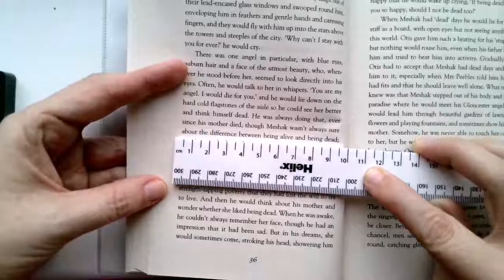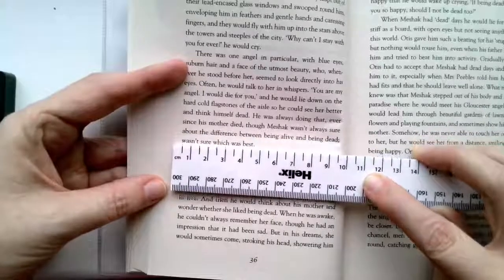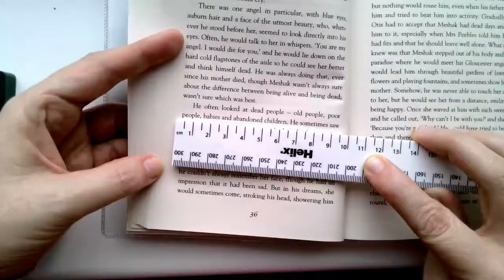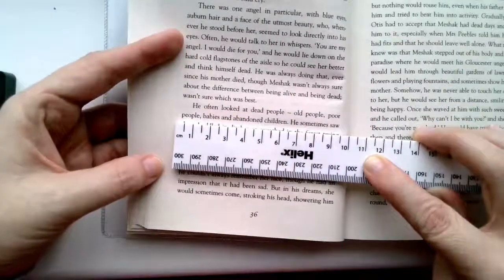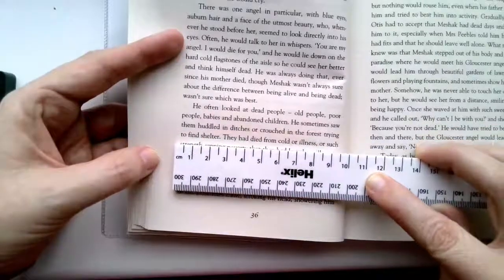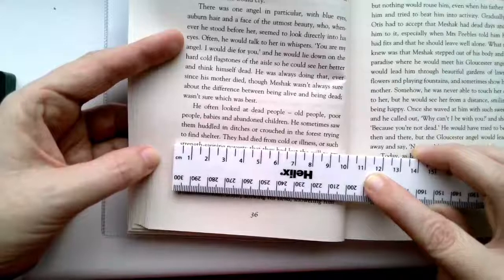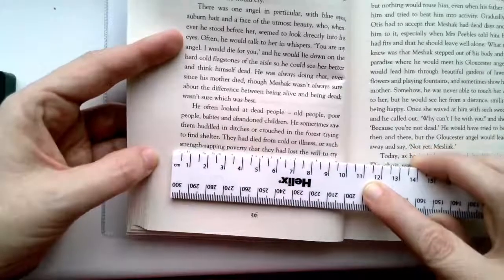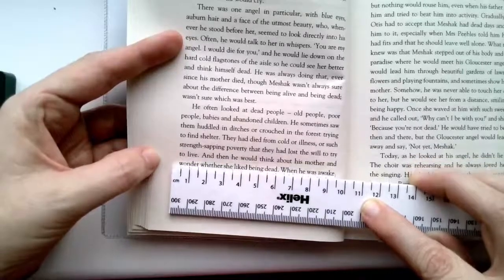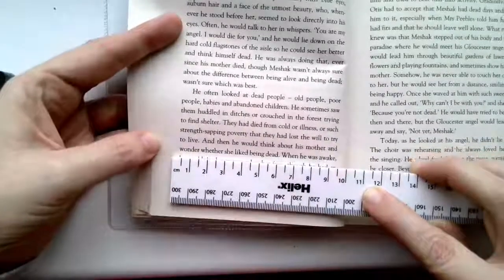Though Meshach wasn't always sure about the difference between being alive and being dead. Wasn't sure which was best. He often looked at dead people: old people, poor people, babies and abandoned children. Sometimes saw them huddled in ditches or crouched in the forest trying to find shelter. They had died from cold or illness or such strength-sapping poverty that they had lost the will to try to live. And then he would think about his mother and wonder whether she liked being dead.